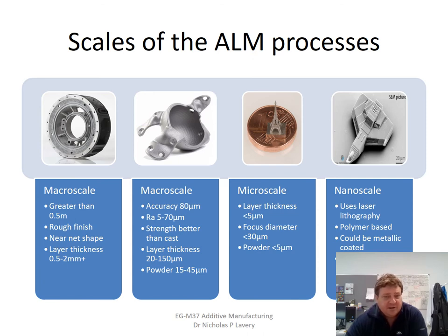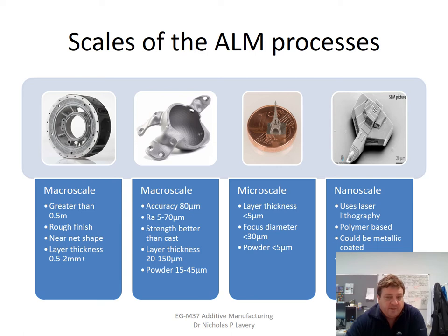At the microscale, more specialist machines are available with very small layer thicknesses and very small laser focus diameters — powders verging on the micro and nano size — allowing very small builds to be made. On the nanoscale, you're mainly dealing with polymers; they have the accuracy and might use laser lithography, possibly coated with metal through vapor deposition. You can get incredibly small structures — for example, a 20-micron spaceship shape with feature sizes right down to 100 nanometers.